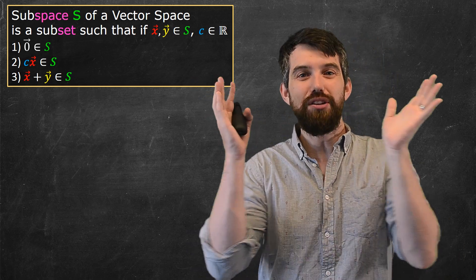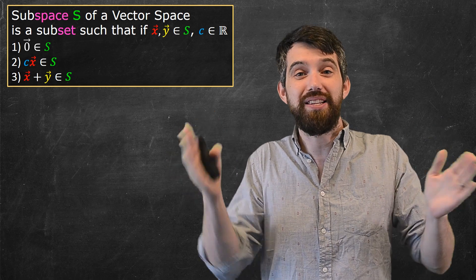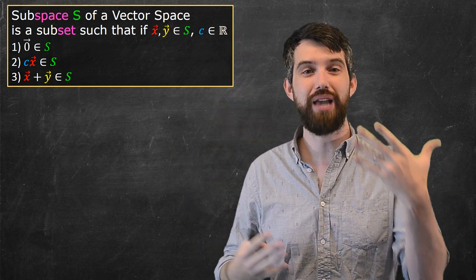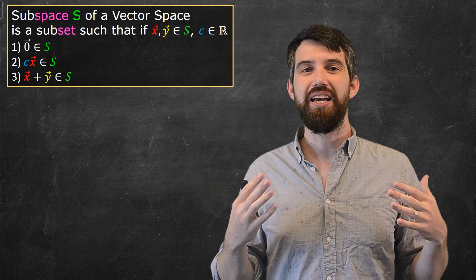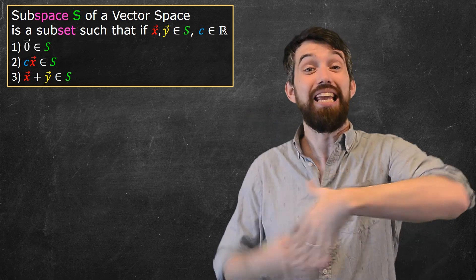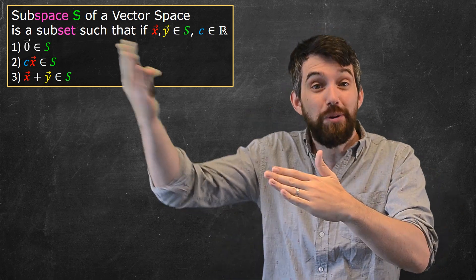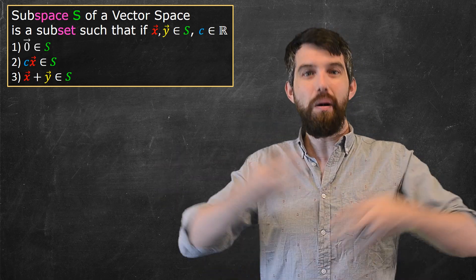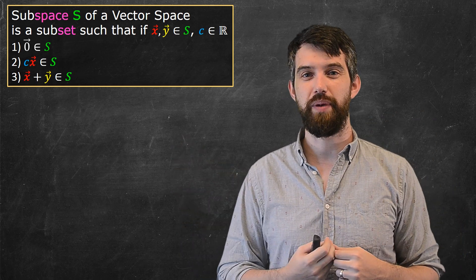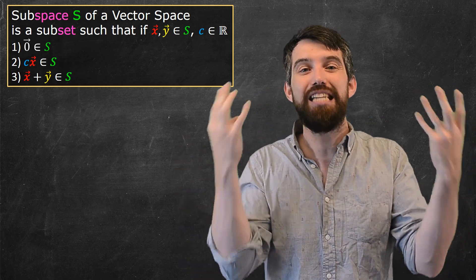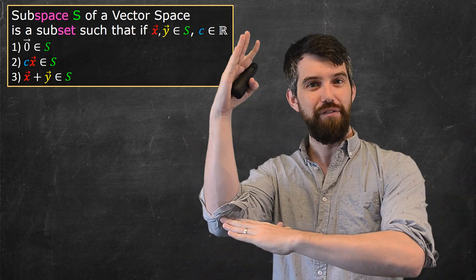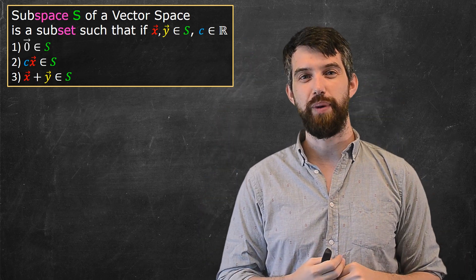It says that if you've got two different vectors who are already in the set, you can add them, and you also get into the set. Secondly, if you've got some vector that's in your subspace, then if you multiply it by any factor, that multiplied version also has to be in your subspace. And finally, if you have two different vectors both in your subspace, if you can tip-to-tail addition them, they're also going to be in the subspace.